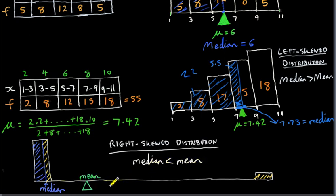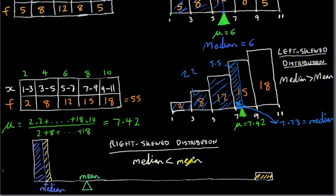For this extreme case it's obvious, but for a much less extreme case it's far from obvious. To summarize: for a left-skewed distribution, the median is greater than the mean; for a right-skewed distribution, the median is less than the mean.